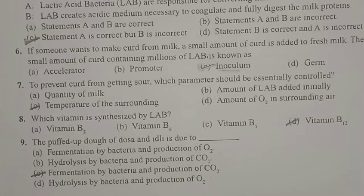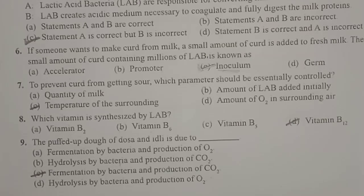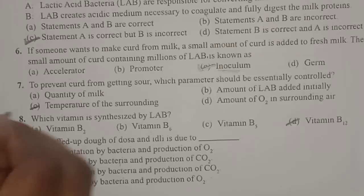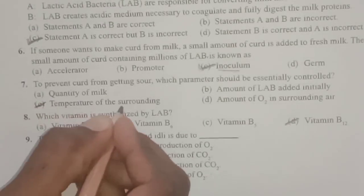Next: to prevent curd from getting sour, which parameter should be essentially controlled? In order to prevent curd from getting sour, the temperature of the surrounding medium is very, very important. If we maintain the proper temperature, it will be possible to prevent the curd from getting sour. So the answer is option C: temperature of the surrounding.